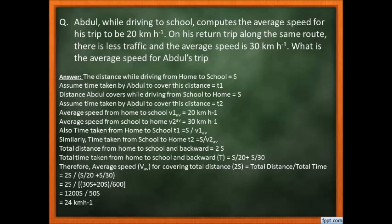Let's see the first question. Abdul, while driving to school, computes the average speed for his trip to be 20 km per hour. On his return trip along the same route, there is less traffic and the average speed is 30 km per hour. What is the average speed for Abdul's entire trip?